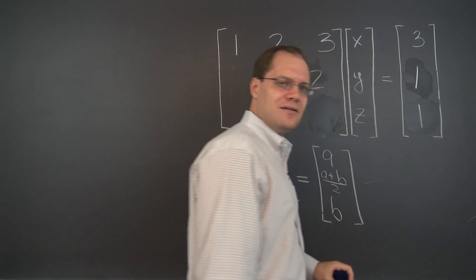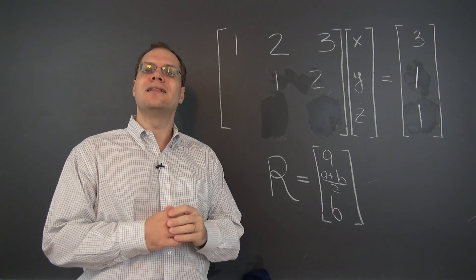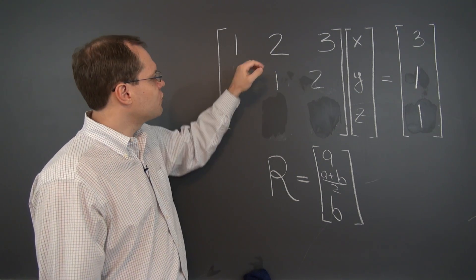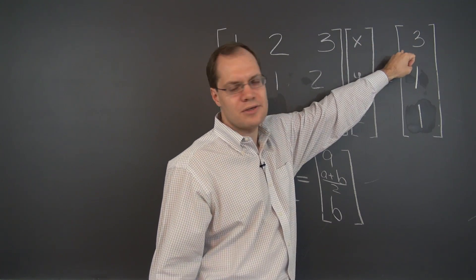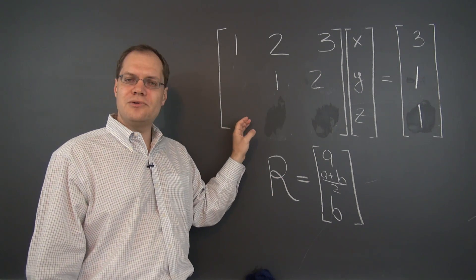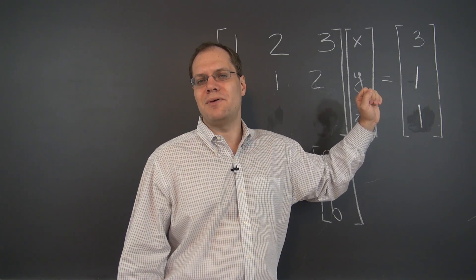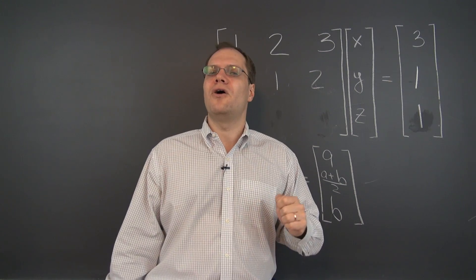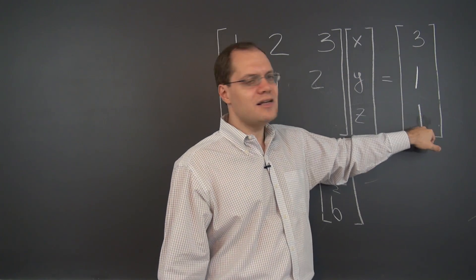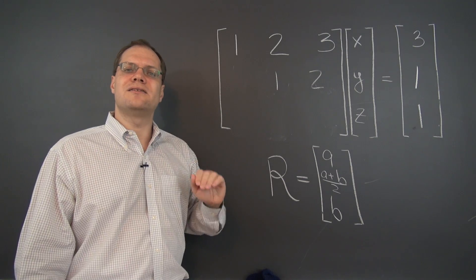Now we have a signal that the system doesn't have any solutions. Let's see that from two points of view. First, from the point of view of individual equations: the first reads x + 2y + 3z = 3, the second reads y + 2z = 1, and the last reads 0x + 0y + 0z = 1, which is impossible because 0x + 0y + 0z always equals 0. So when you have all zeros in a row on the left-hand side and a non-zero entry on the right-hand side, you can stop — the system has no solutions.